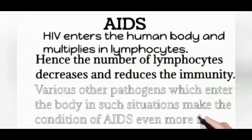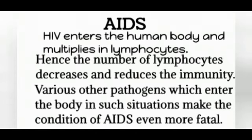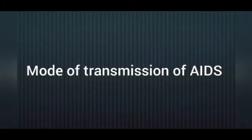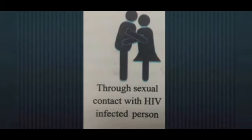If we have an immunity deficiency, we can easily get viruses, bacteria, fungus, etc. We can easily get disease. That's why AIDS is a main concern. We are going to discuss about the mode of transmission of AIDS. The first one is through sexual contact with an HIV-infected person.